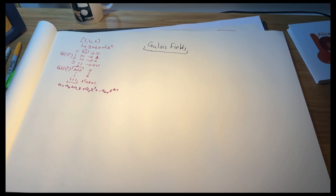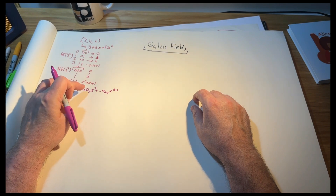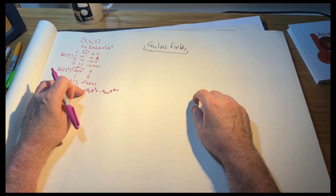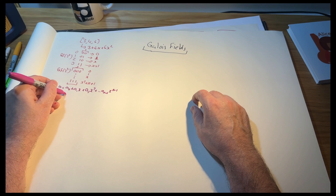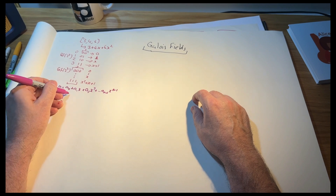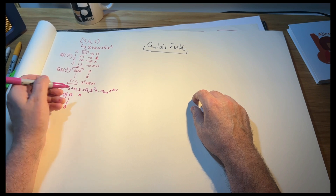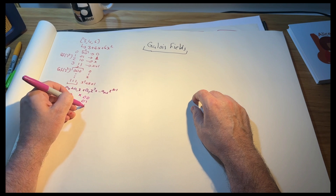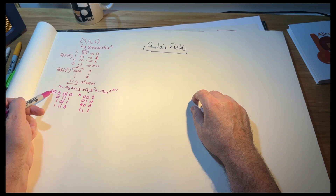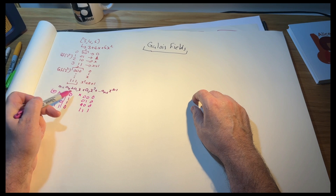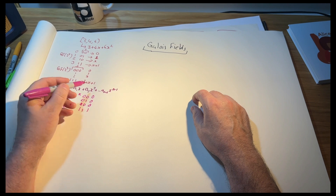The operations we perform are a binary addition and a binary multiplication. With binary addition we take, for example, zero zero zero zero XOR one one zero one one and get zero one one zero. An addition is like an XOR operation, and a multiplication is like an AND operation.